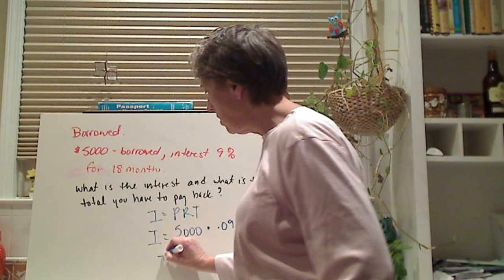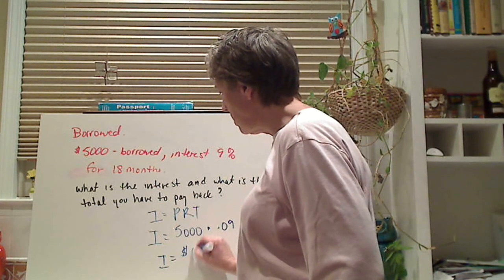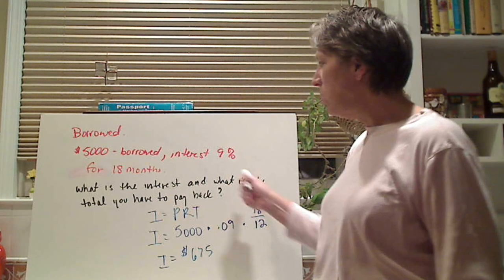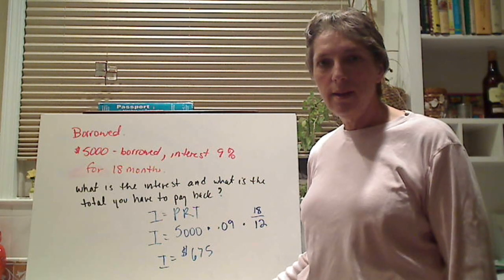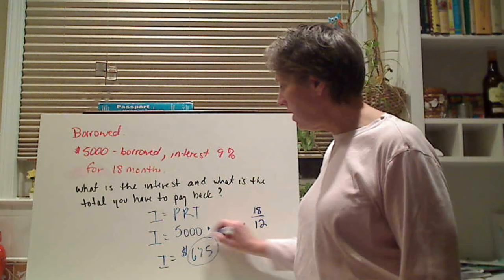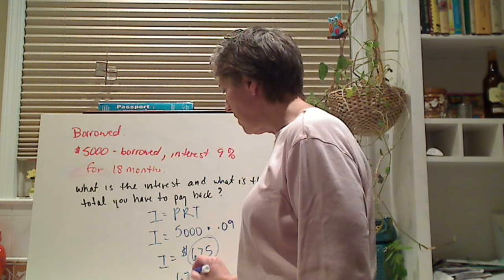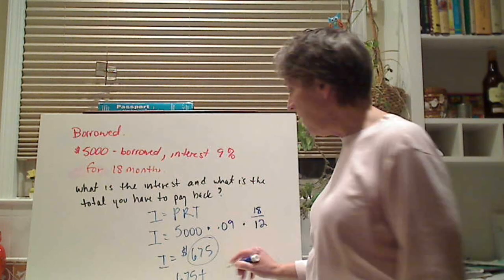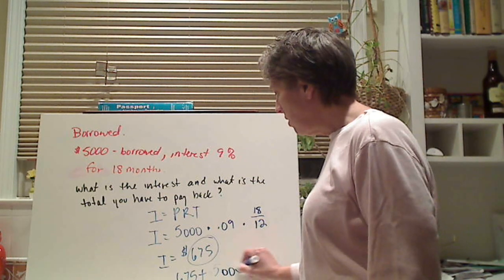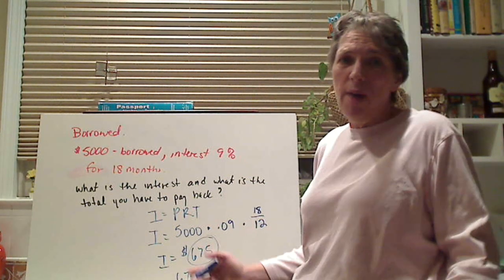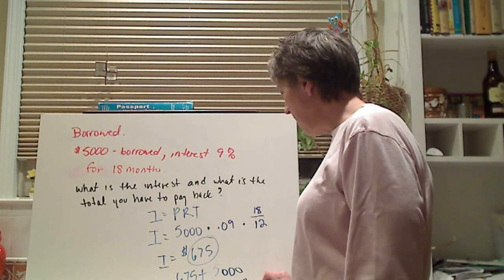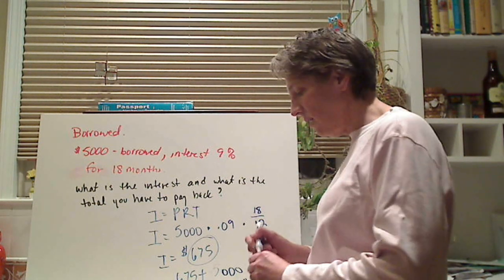So my interest is $675. So that's the interest. But how much do I have to pay back? I have to pay back $675. So I say $675 plus, what did I borrow? $5,000. I have to pay it all back. So my total answer I have to pay back is $5,675.